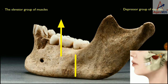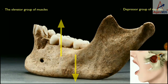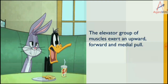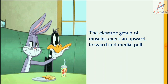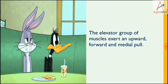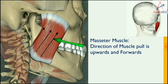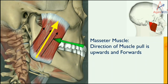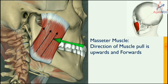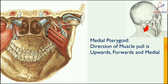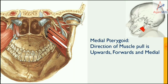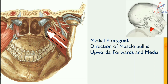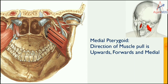There are mainly two groups of muscles: elevators and depressors. The elevator group of muscles exert upward, forward and medial pull on the mandible, causing it to close. One such muscle is the masseter, which directs the mandible in an upward and forward direction. Another muscle is the medial pterygoid, with a direction of pull that is upward, forward and medial.